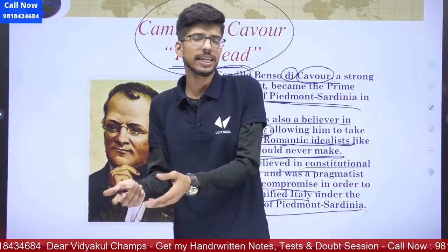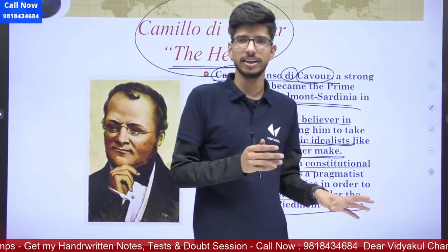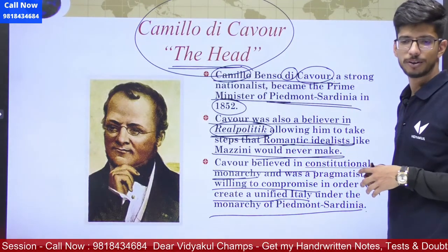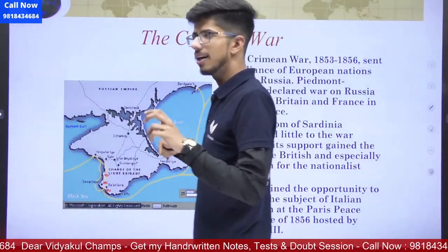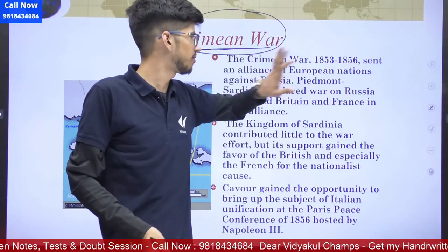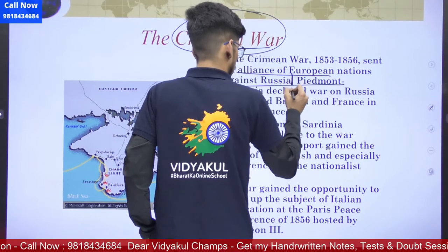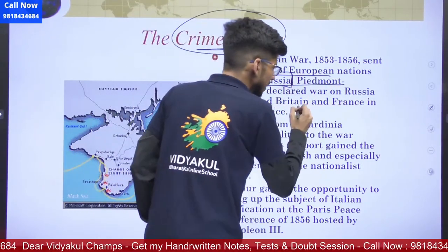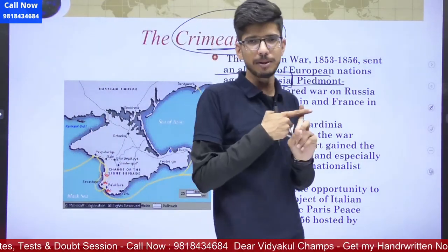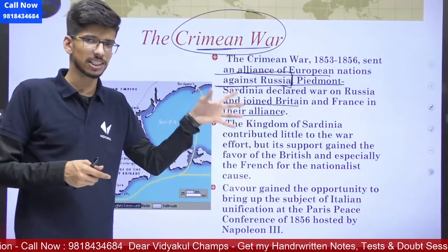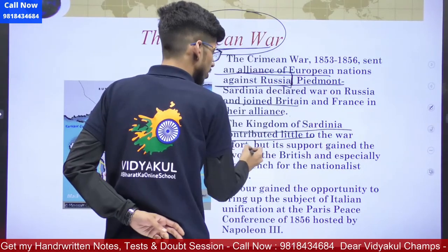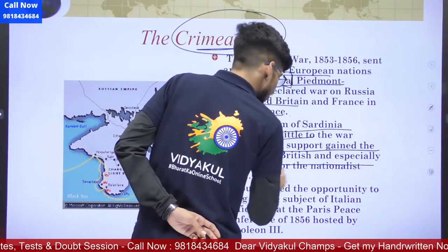Cavour wanted to unify Italy at least under the monarchy of Sardinia-Piedmont, since he was its prime minister. Now a different angle emerged — the Crimean War, from 1853 to 1856, which sent an alliance of European nations against Russia. Sardinia-Piedmont declared war on Russia and joined Britain and France in their alliance. Just imagine: Cavour became PM in 1852, and in 1853 Sardinia-Piedmont went to war against Russia alongside France and England. The kingdom of Sardinia contributed little to the war effort, but its support gained the favor of Britain and especially France for the Italian nationalist cause.